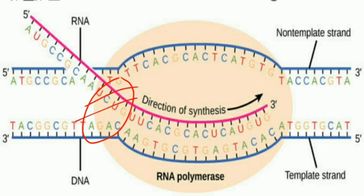The protein bridge exposes only one nucleotide at a time to the growing RNA; the rest of the nucleotides are hidden. When the polymerase moves, the next nucleotide is exposed, and in this way elongation proceeds.